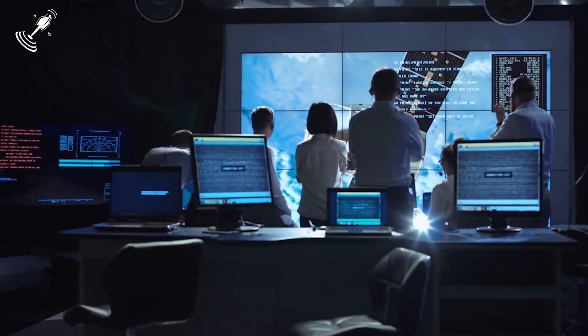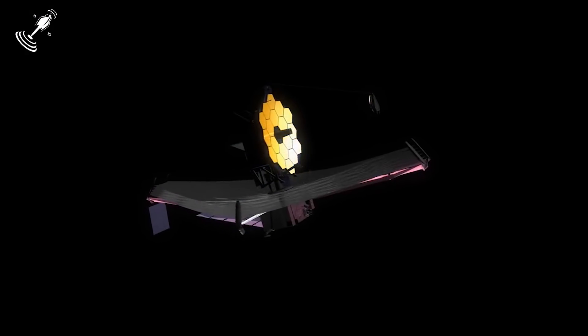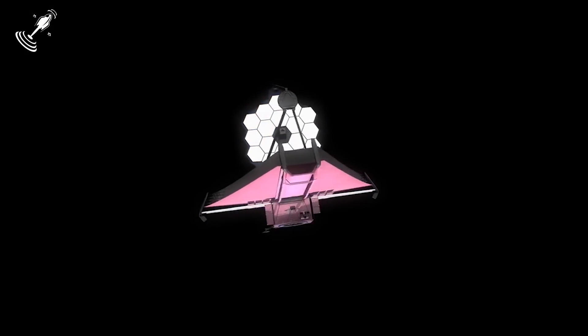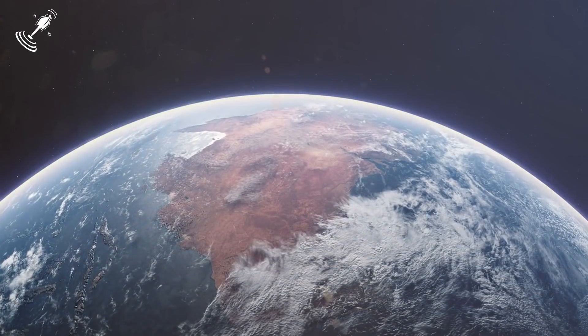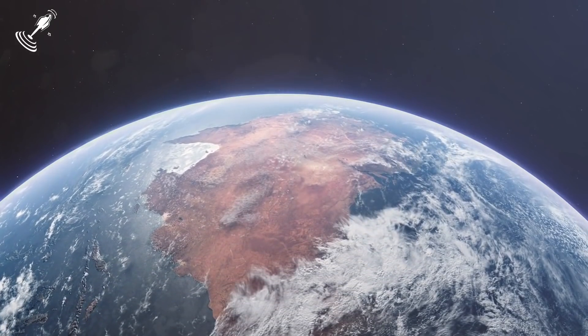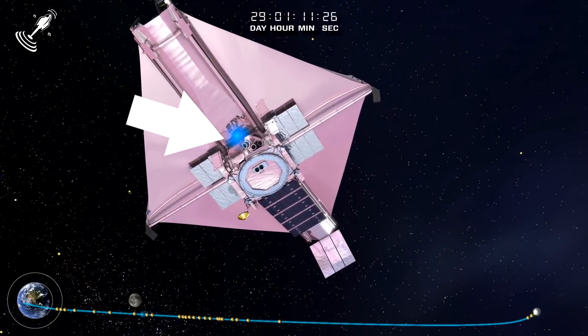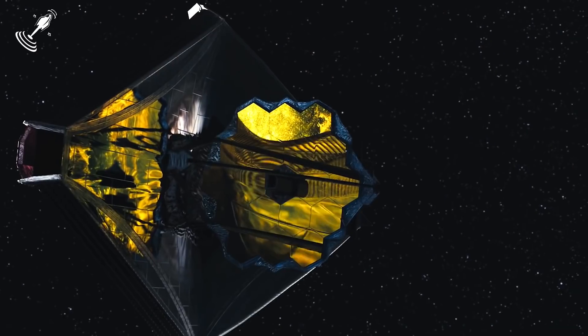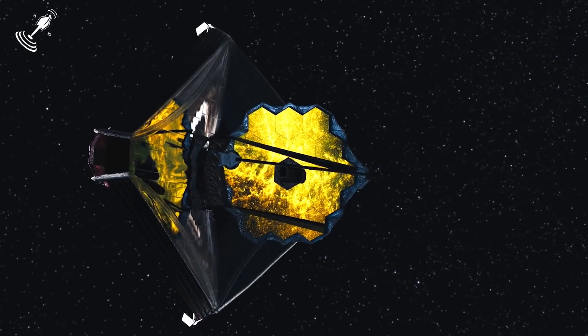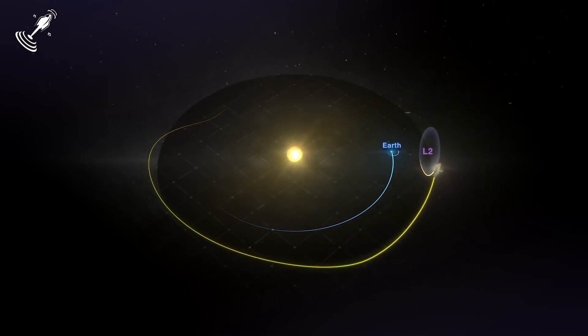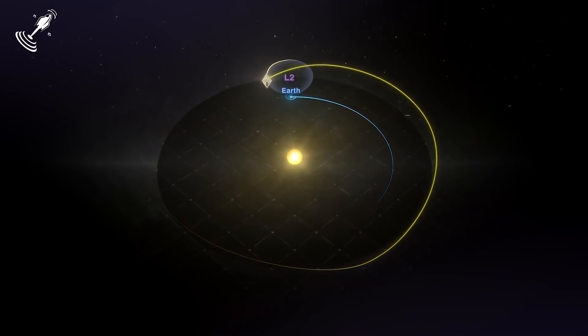These five months will be all about scientists tweaking and testing the telescope so that it can prepare for its lifelong journey of helping us understand our home planet. It arrived at its location after a final five-minute firing of the main thruster of the spacecraft, where the gravitational forces of the Earth and Sun come together.